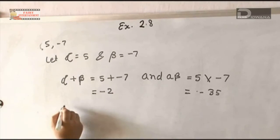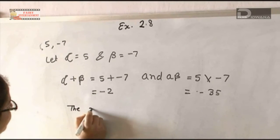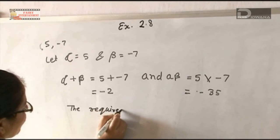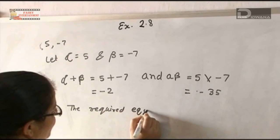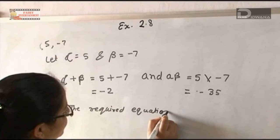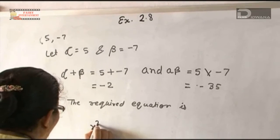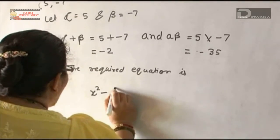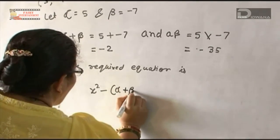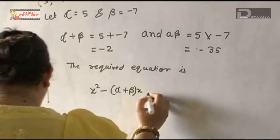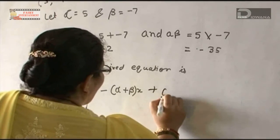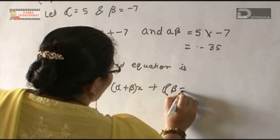The required equation is: x² - (α + β)x + αβ = 0.